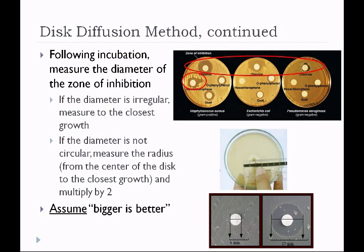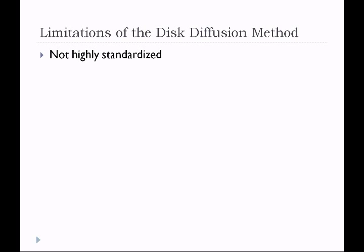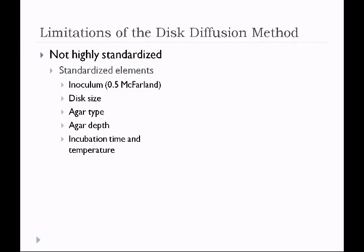For this test, we make the assumption that the bigger the zone, the more effective the product, though there are some flaws in this assumption. The disc diffusion method is not highly standardized. Standardized elements include: the same 0.5 McFarland inoculum, a 6 mm disc size, the same type of agar, depth poured as close to 4 mm as possible, and constant time and temperature of incubation. However, the amount of product saturated into the disc is not standardized.